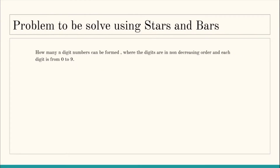Let's look at the problem we'll be solving in this lecture. You are given n, and you have to count the total number of n-digit numbers that can be formed such that the digits are in non-decreasing order, where each digit is from 0 to 9. So you need to find the total number of n-digit numbers where each digit can be 0, 1, 2, 3, and so on up to 9, with the condition that the digits must be in non-decreasing order.